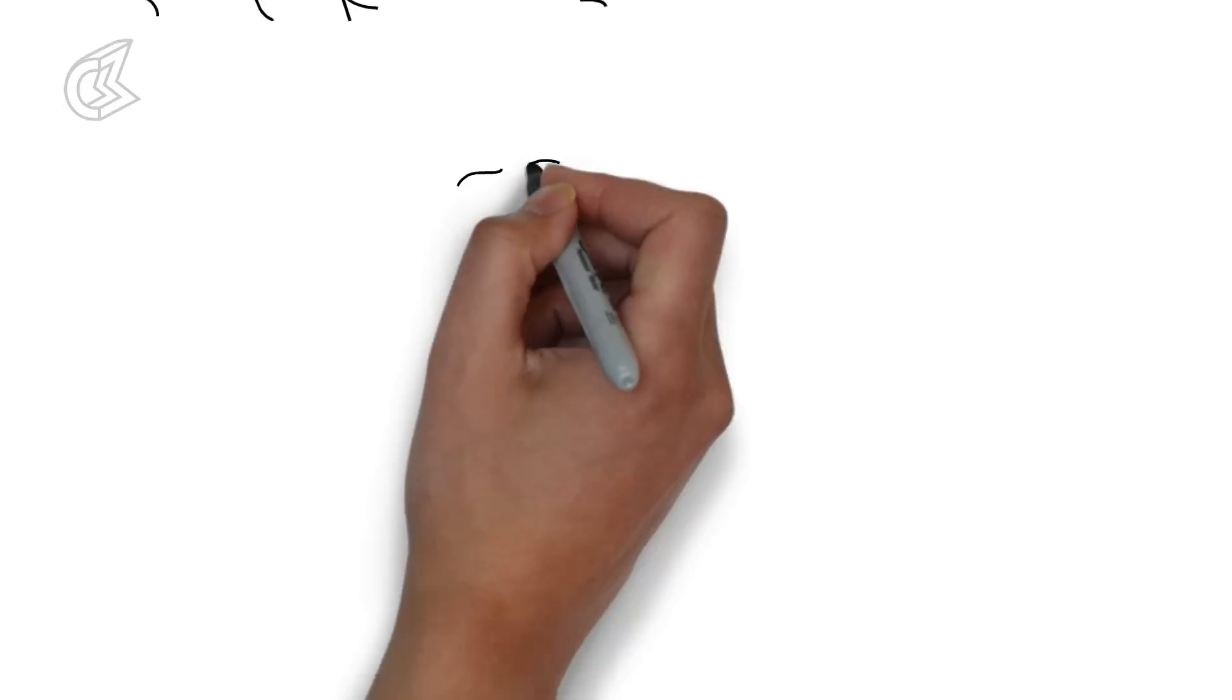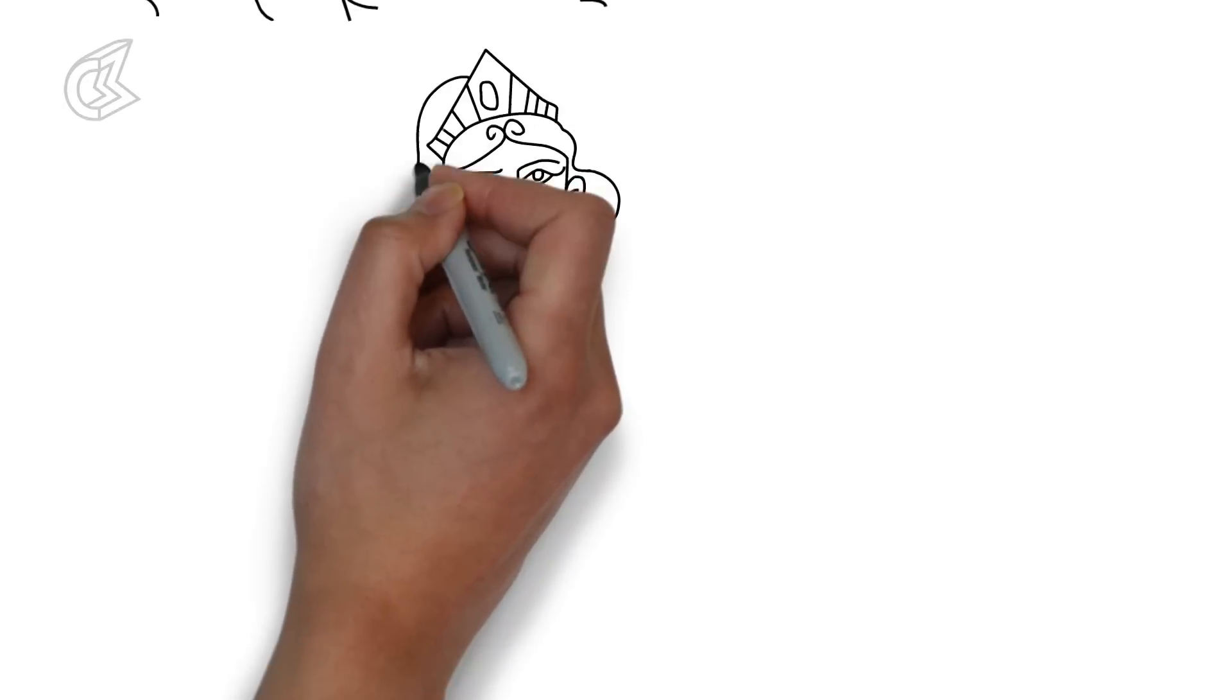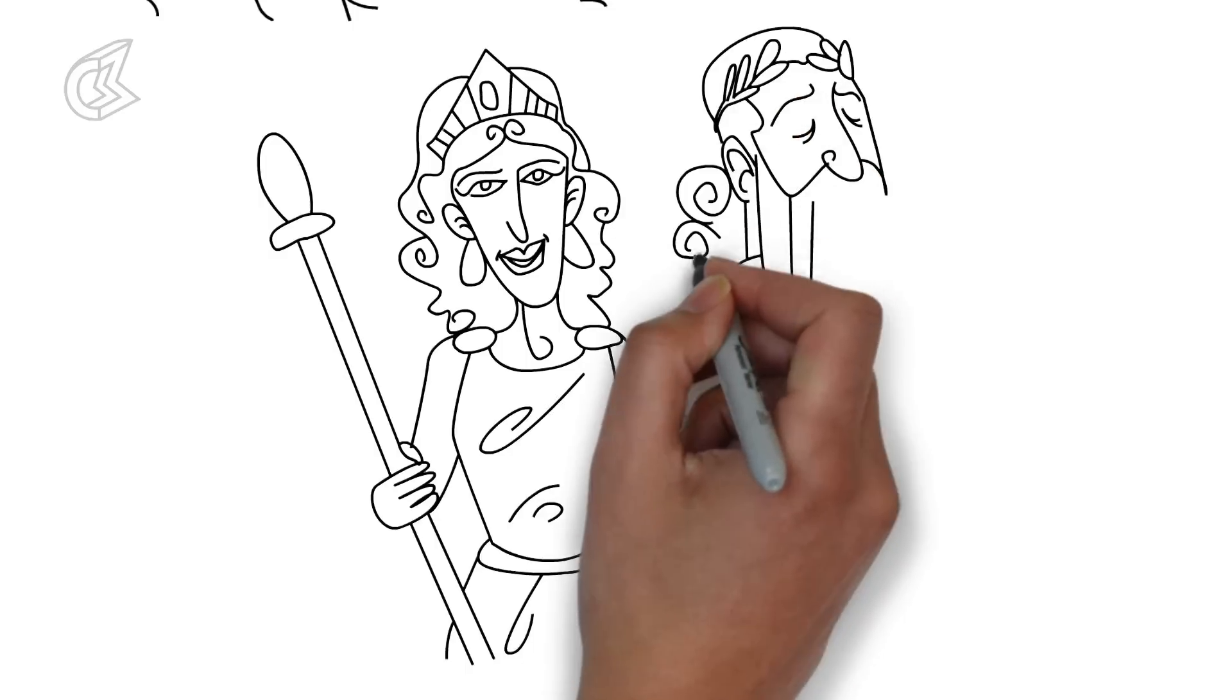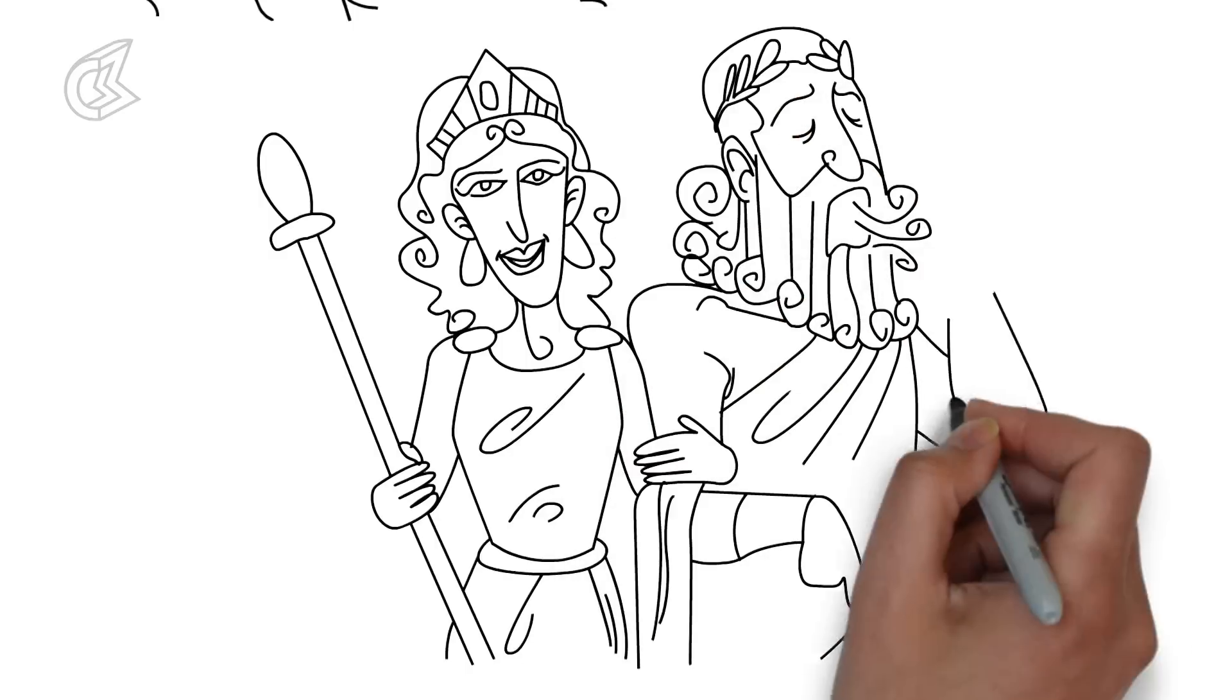He was married to Hera, the goddess of marriage and childbirth. But there were many times when he went lusting after other women, much to the frustration of his wife.